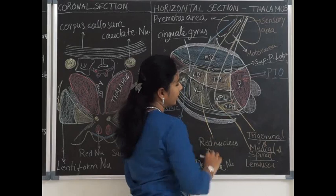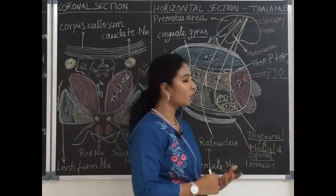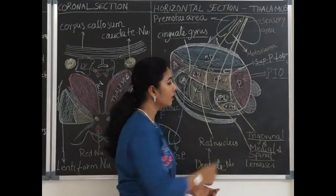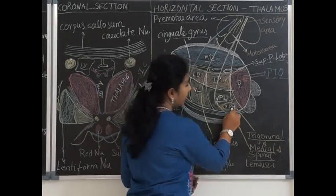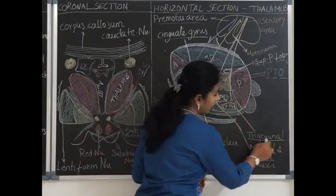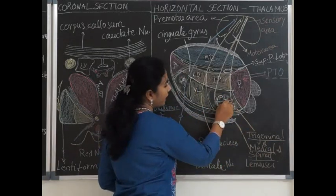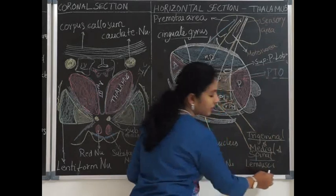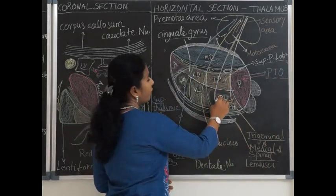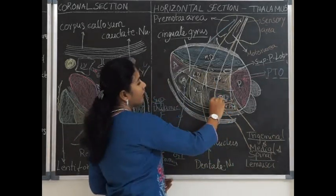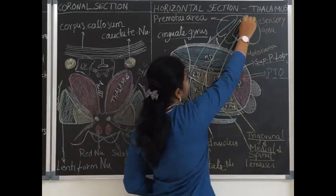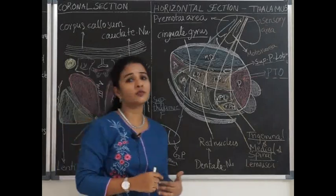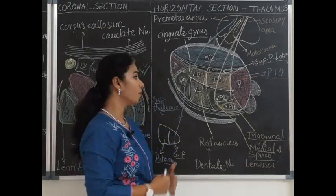The ventral posterior nucleus has two parts. The ventral posterior medial nucleus has connections with the trigeminal lemniscus. The ventral posterior lateral nucleus receives connections from the medial and spinal lemnisci, and from these nuclei the fibers reach the sensory cortex carrying most senses from the opposite half of the body.